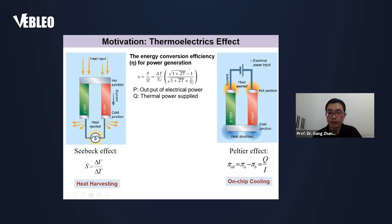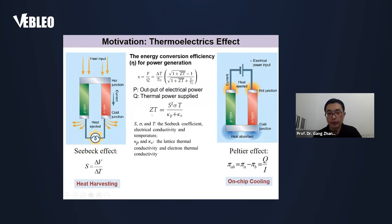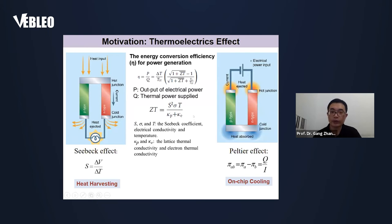In the thermoelectric effect, we usually use eta (η) to describe the energy conversion efficiency. Here, ZT is the figure of merit. It depends on the Seebeck coefficient, electrical conductivity, temperature, and thermal conductivity of the materials. For the thermoelectric effect, we hope to reduce the thermal conductivity to enhance the efficiency — to enhance η and then enhance the efficiency.